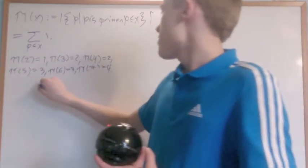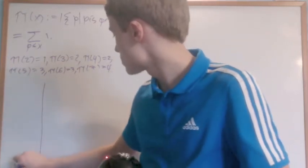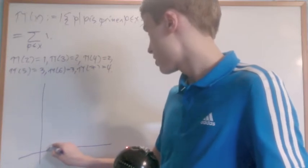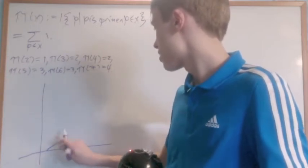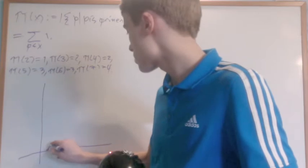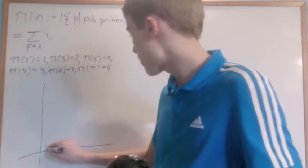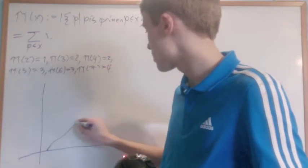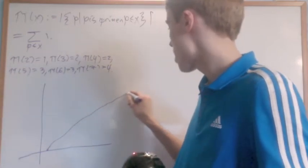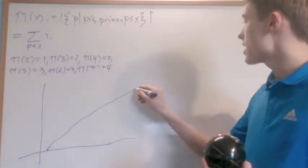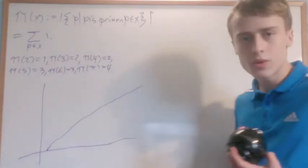If you imagine graphing this out: 1 is 0, 2 goes up to 1, 3 goes up to 2, so that's sort of linear. 4 sort of slows it down. So it goes up sort of linearly, but it slows down. It's just dragging behind a linear function is really what we're observing here.